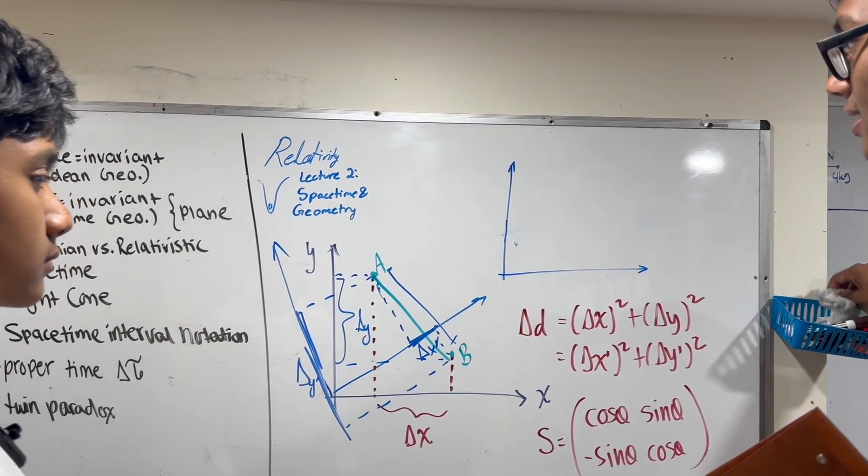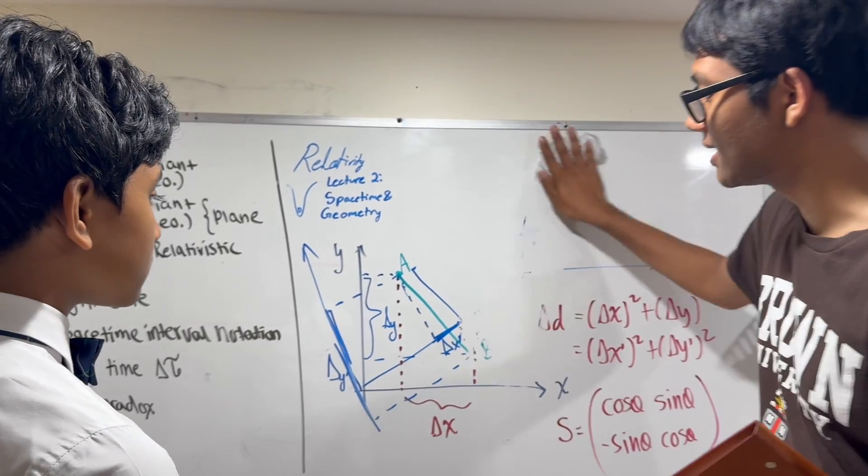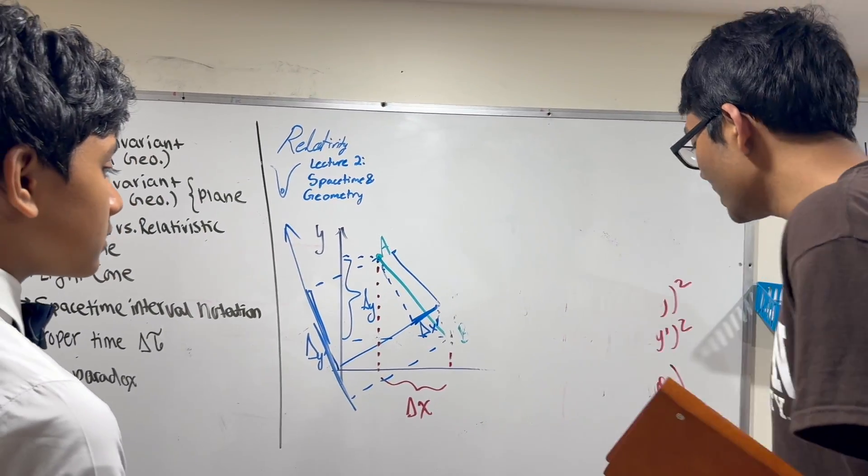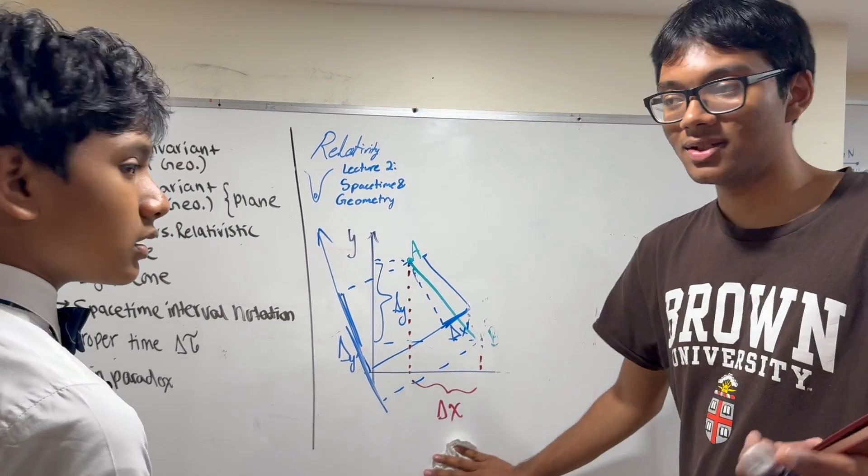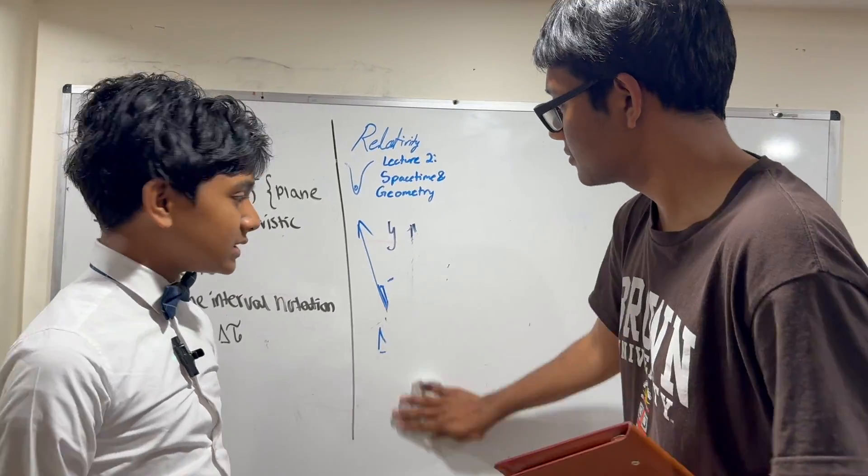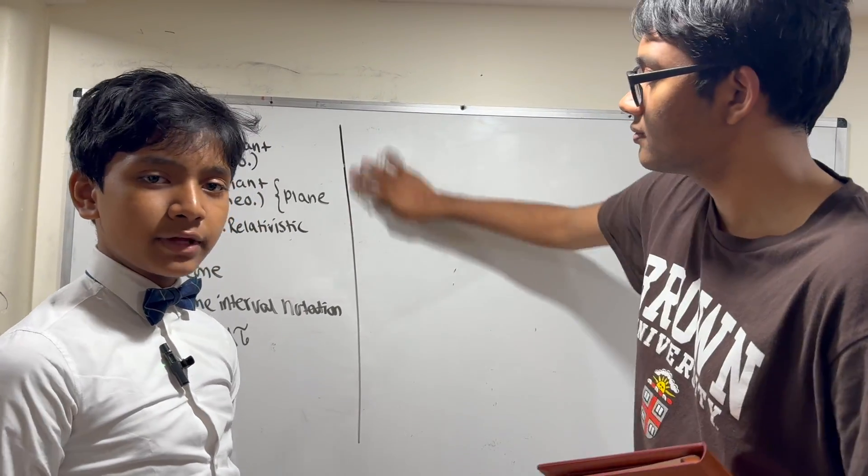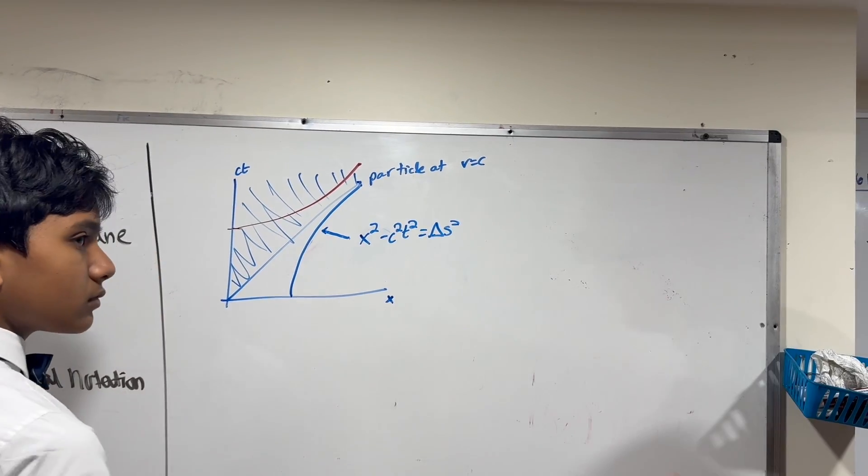This is in Euclidean geometry. The distance is the same. Now, in space-time geometry, what's the same? Can you tell the viewers? What's the same is the space-time interval that we examined before. That's the space-time interval.